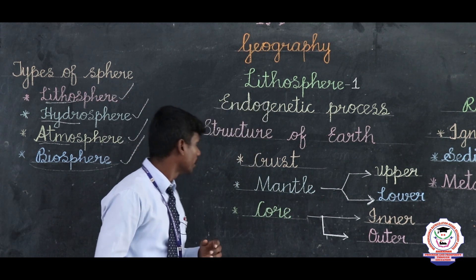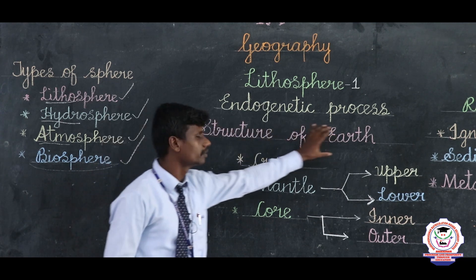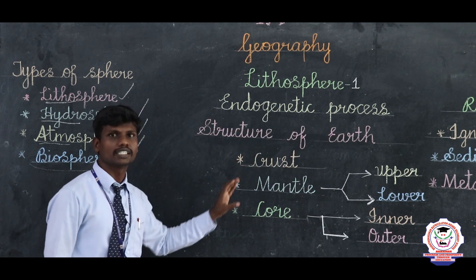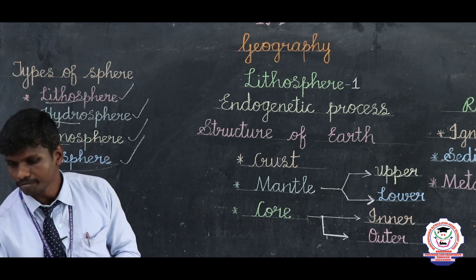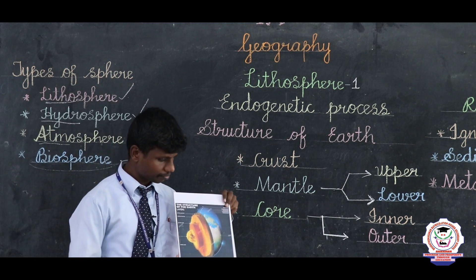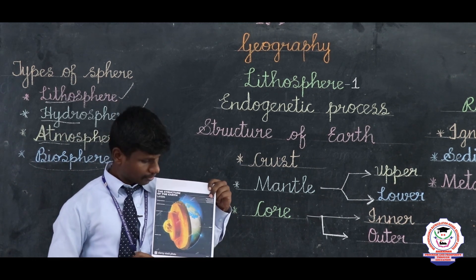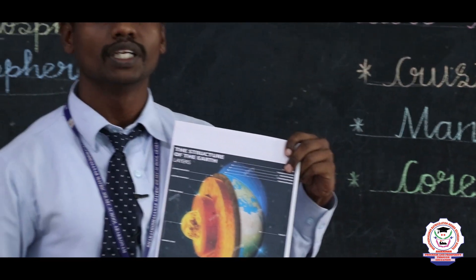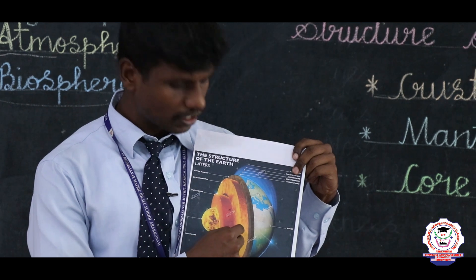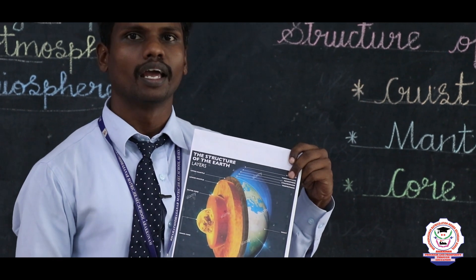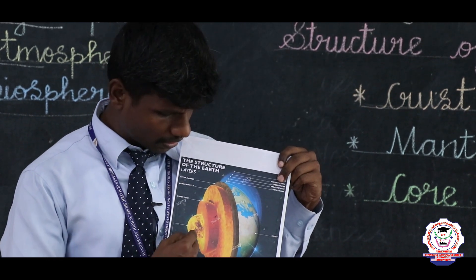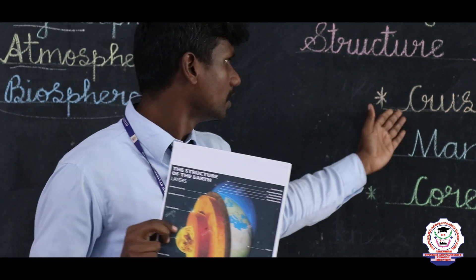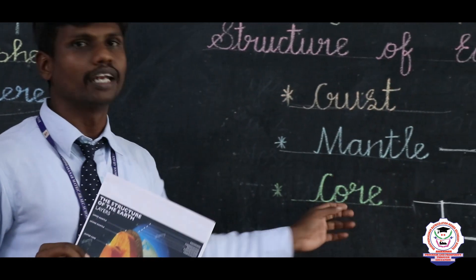Before that, we have to know the structure of the earth. The structure of the earth consists of three layers. Here I can show you those three layers. The first one is the crust, the second one is known as the mantle, and the third one is known as the core.